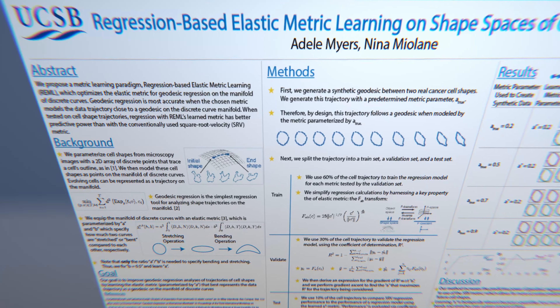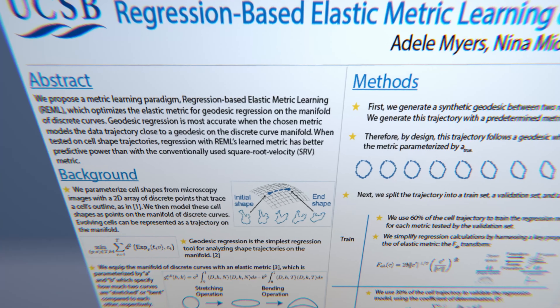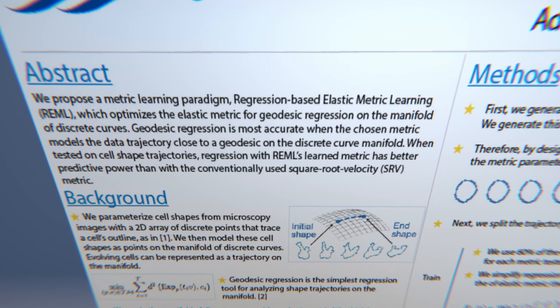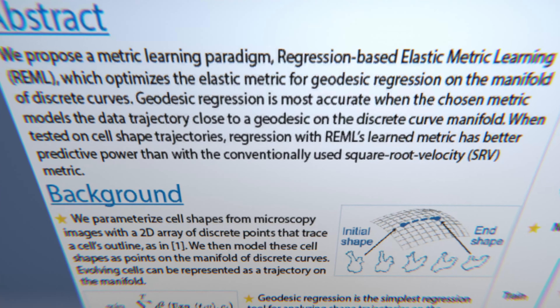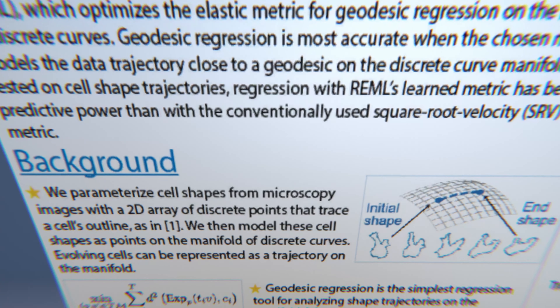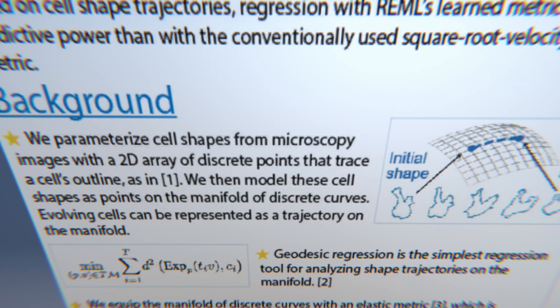Step one: if you consider one cell shape, we take samples along the surface, or the outline, of the cell. Step two: once we've taken a bunch of samples around the outline of the cell, we project this discrete curve onto a shape space. Step three: do that for the entire cell trajectory. So if we're considering a cell as it changes over time, we project all of those cells onto the shape space, where they form a trajectory. Next, we quotient by rotation, scaling, and translation, and now all of these cells lie on the manifold of discrete curves.